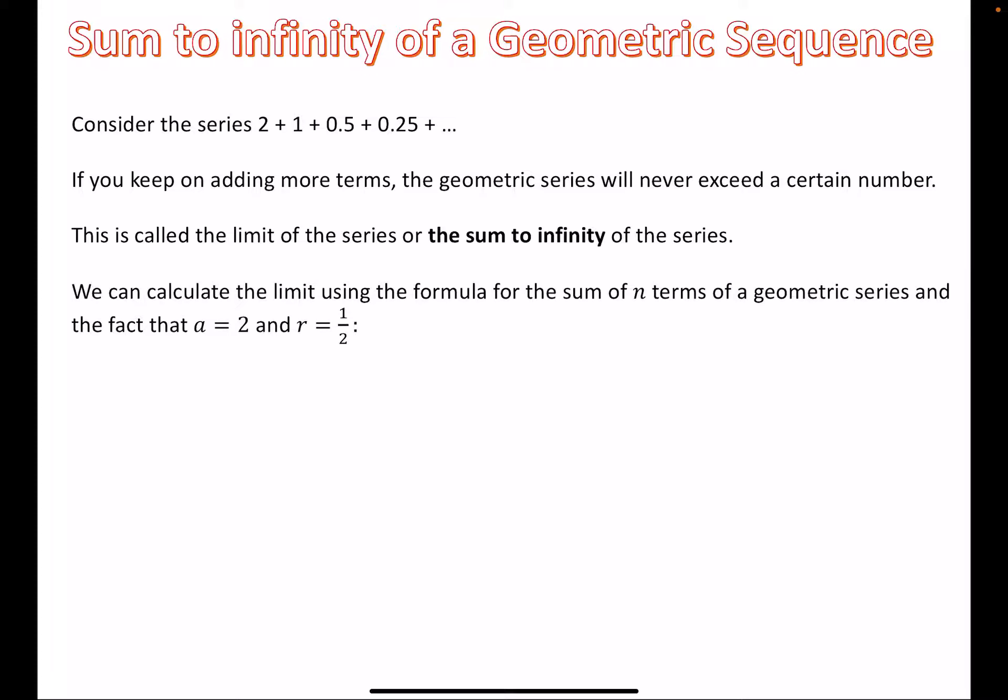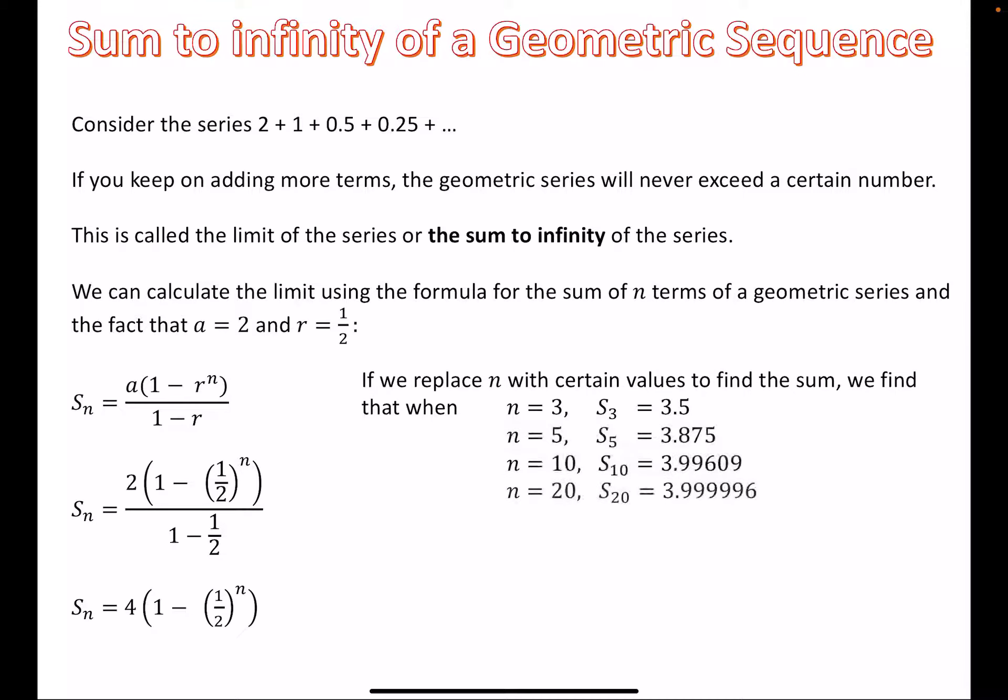We can calculate the limit using the formula for the sum of n terms of a geometric series and the fact that we know the first term a is 2 and the common ratio is a half. So the sum to n terms will be equal to that, and then we shove in the numbers. If we start replacing n with certain values to find the sum of certain amounts of terms, we can start looking at what the trend does.